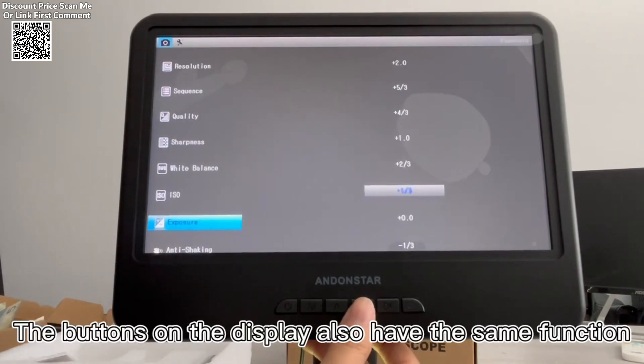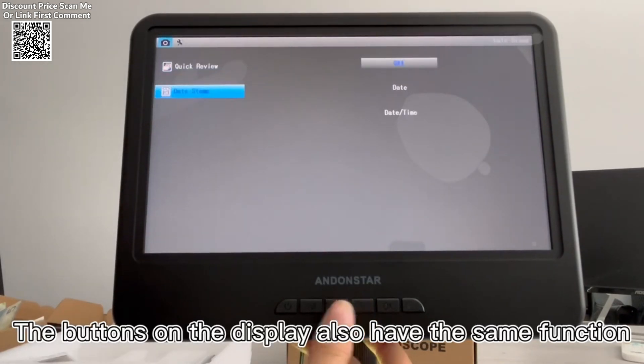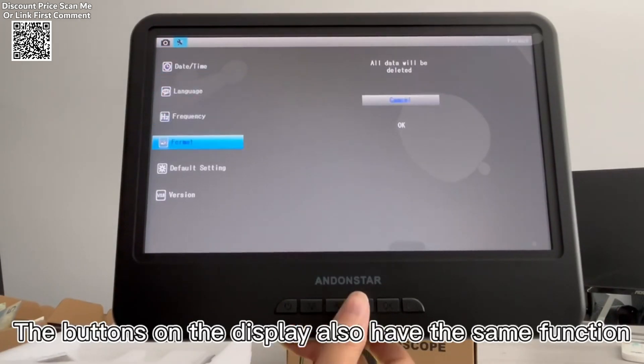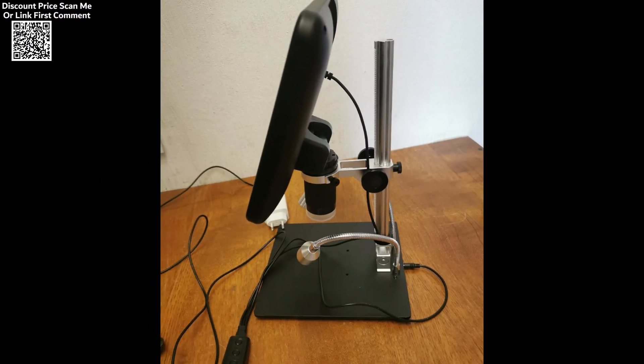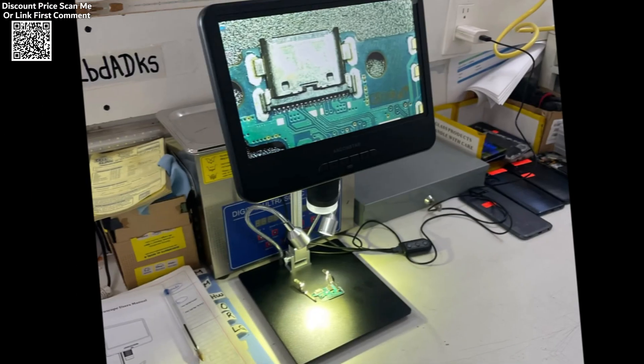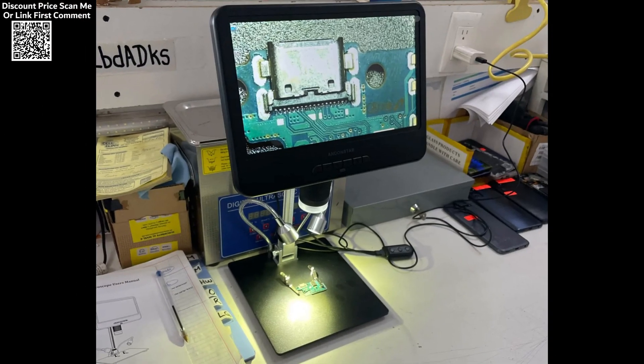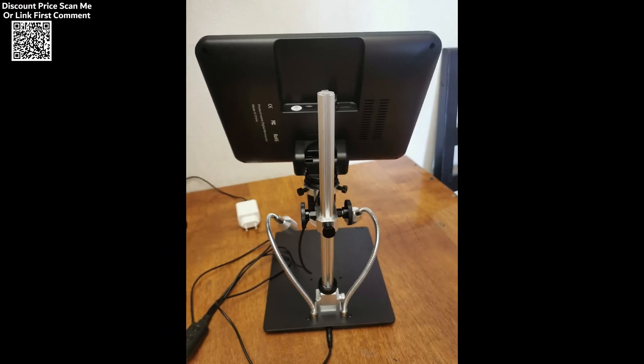The AD-210 is powered via USB 5V DC, making it convenient to set up and use with any standard power source. It supports storage through a microSD card with a maximum capacity of 32GB, allowing users to save videos and photos directly on the device. This feature makes it a practical solution for anyone needing to document their work or store media for later review without the need for constant PC connection.